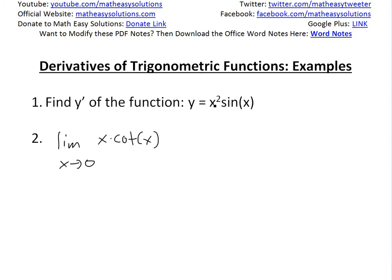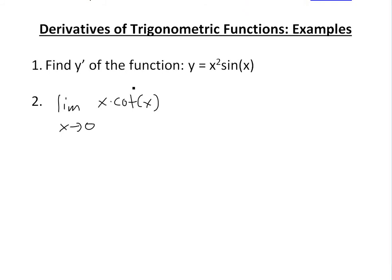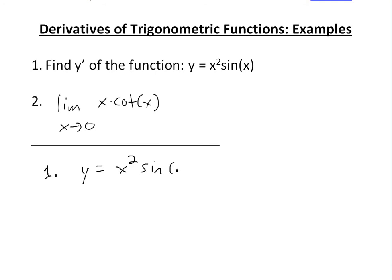The first one is a derivative of this function and the second is actually limits — but limits and derivatives, they're all the same. I'll go over the first example which states: find the derivative of y equals x squared times sine of x. So if we look at number one, we write y equals x squared times sine of x.